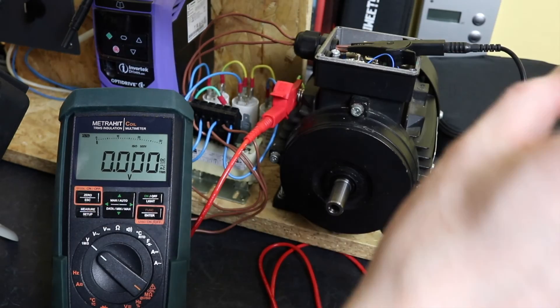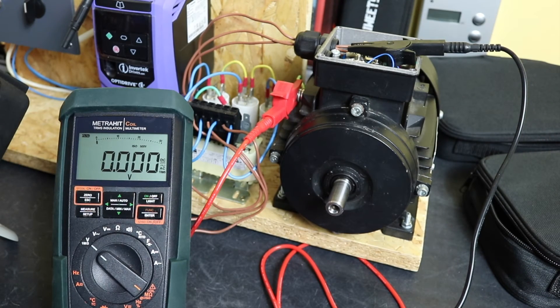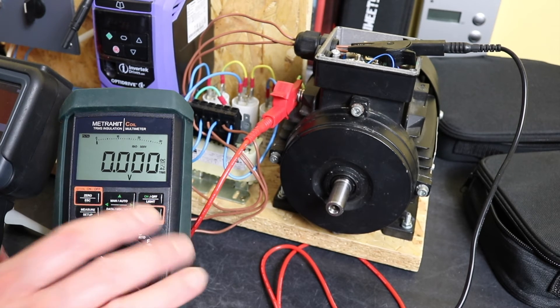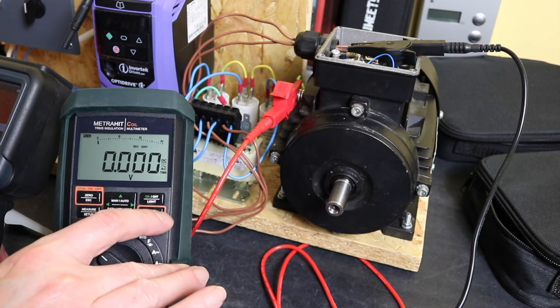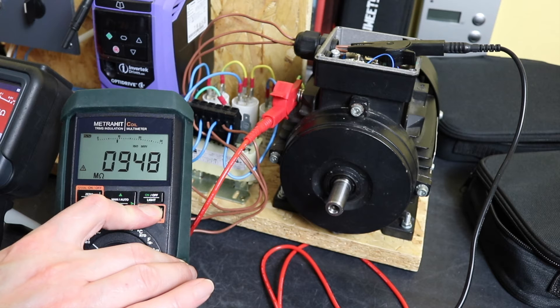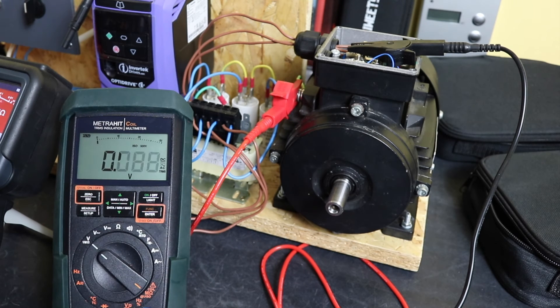We've saved the worst one till last. This is the Metrel HT coil. This has no DAR PI functionality, can't even lock it on for a timer, so I'm going to have to hold this one in manually and again our timer from the MTR105. It's 948 at 30 seconds, and 1028 was our final value at 60 seconds.